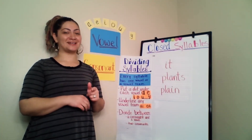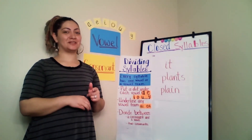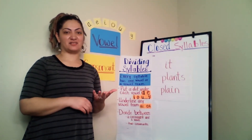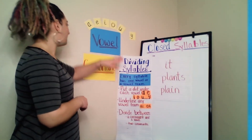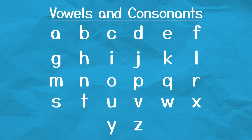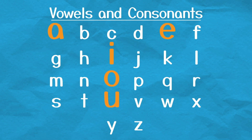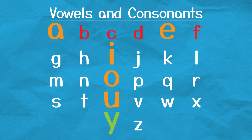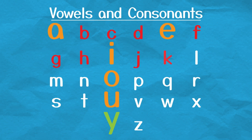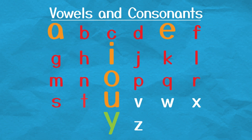Let's remind ourselves of what a vowel and a consonant are. Vowels are A, E, I, O, U, and sometimes Y. Consonants are all the other letters in the alphabet that aren't vowels. So if a letter is not a vowel, then it's a consonant.